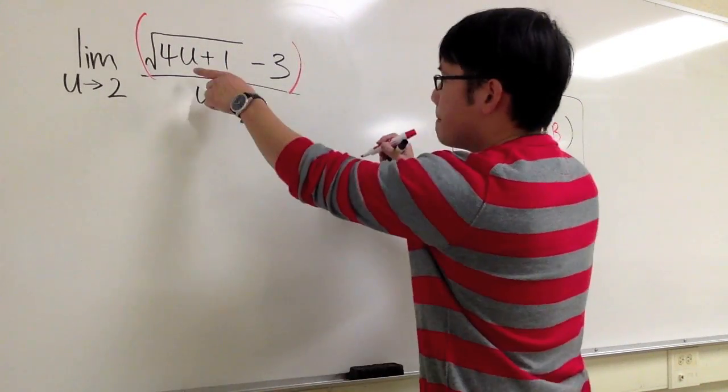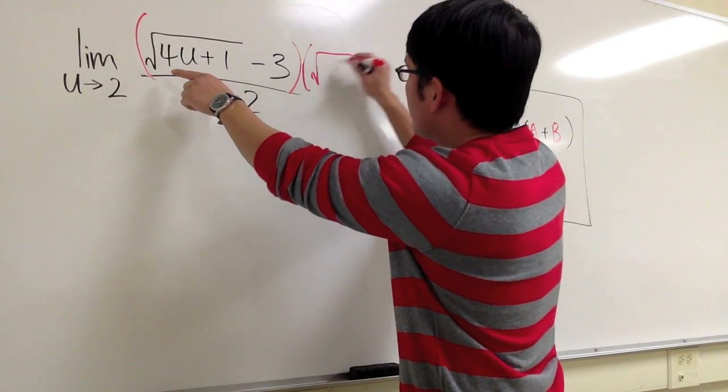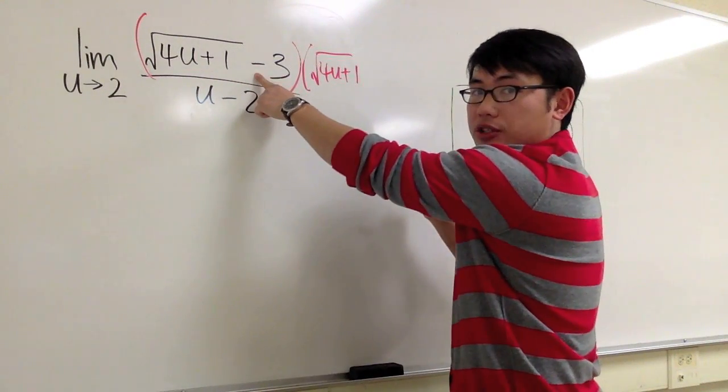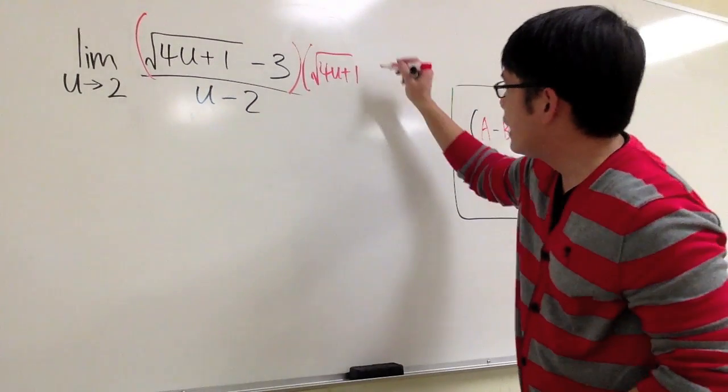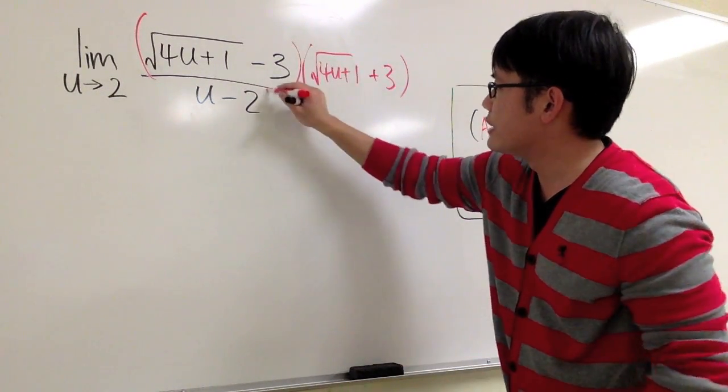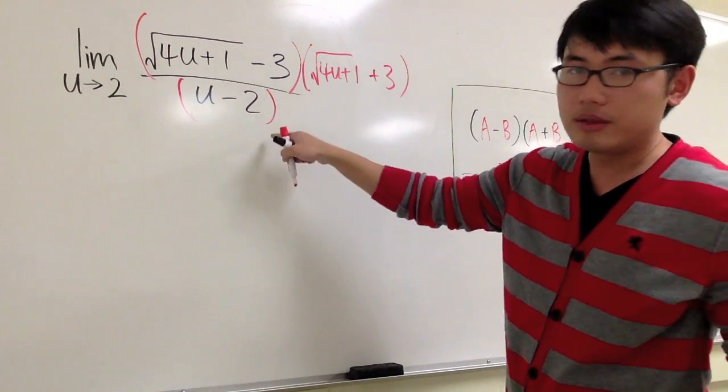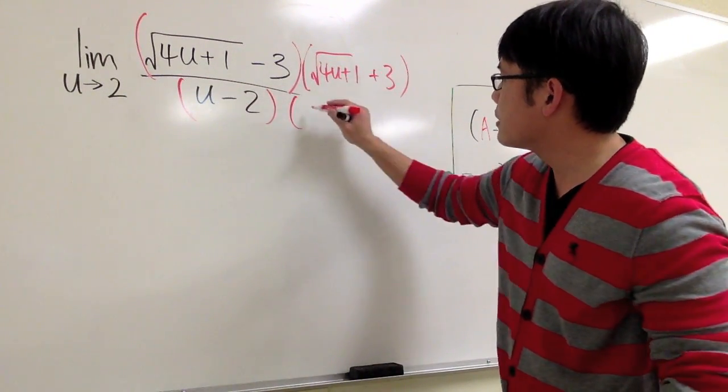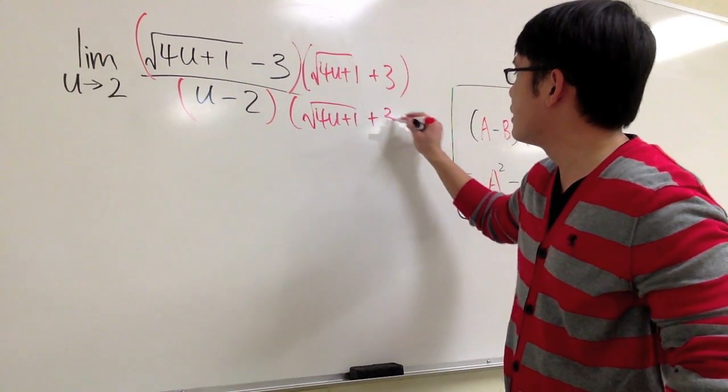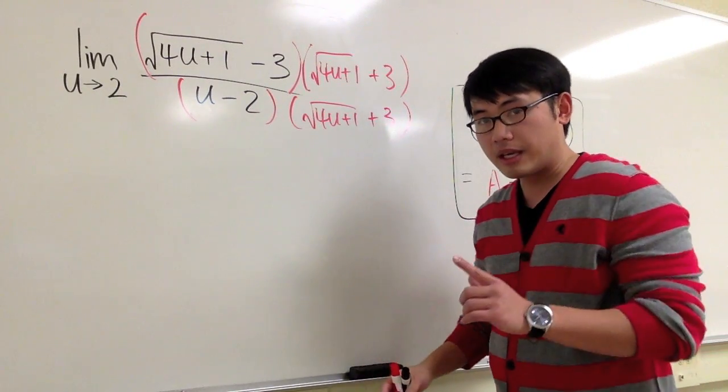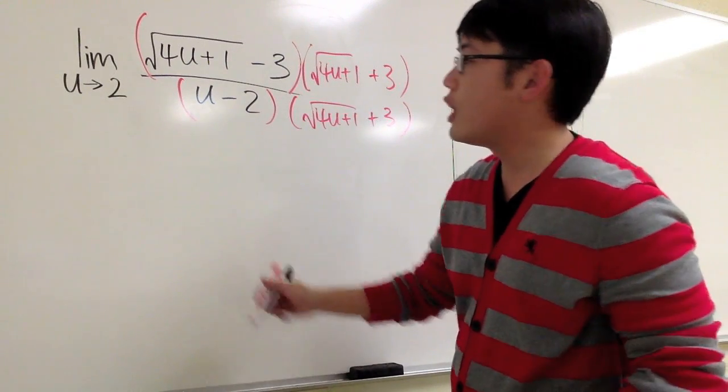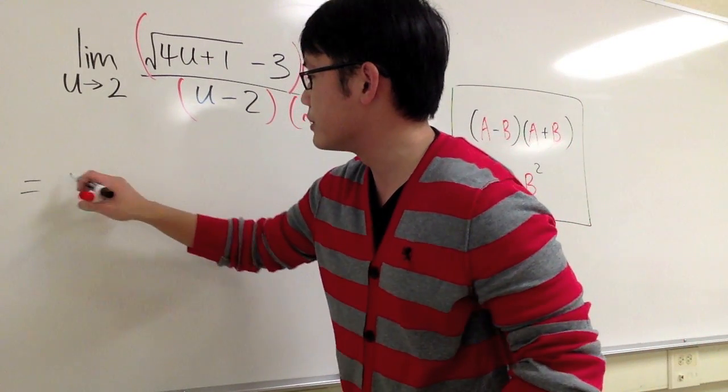I'll multiply the top by square root of 4u plus 1. This was a subtraction, so I have to have a plus right here. I will add the 3. And we also do the same on the denominator: u minus 2 times the same thing, square root of 4u plus 1 and then plus 3.